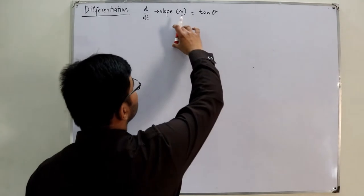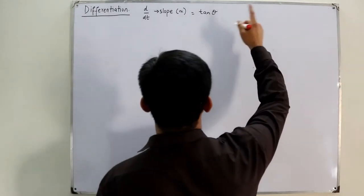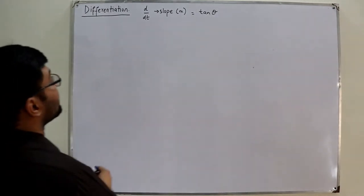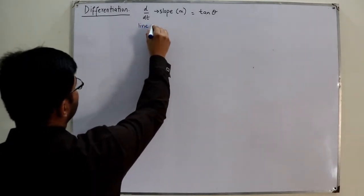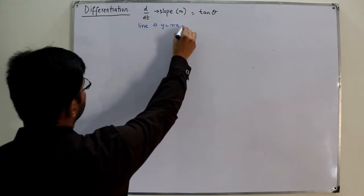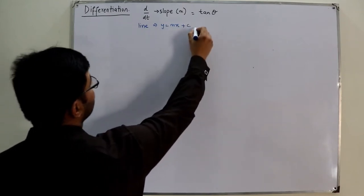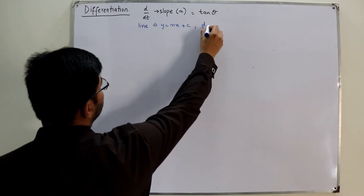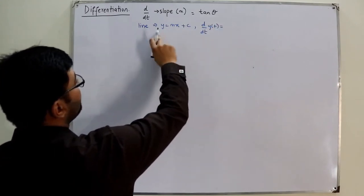If you have a line, the equation is y = mx + c. Now if you want to find the derivative of the line, you have d/dt of y(t), which would be equal to m — m comes outside — times the derivative of x with respect to t.